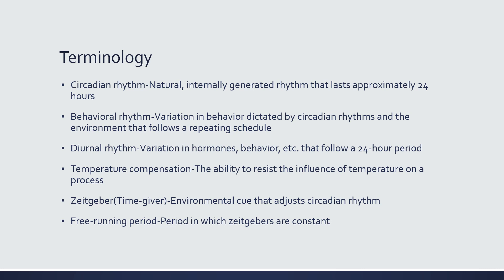A behavioral rhythm is a variation in behavior that can be dictated by circadian rhythms and the environment, that follows a repeating schedule. It doesn't necessarily have to follow a 24-hour schedule. For example, other animals tend to have a mating season, so that behavioral rhythm follows a much longer, more seasonal rhythm than a daily rhythm. The important factor here is that not only will circadian rhythms affect your behavioral rhythms, but your behavioral rhythms will also affect your circadian rhythms.